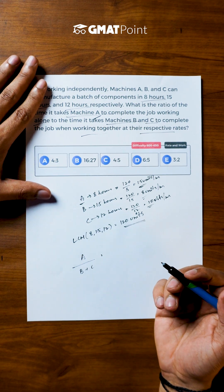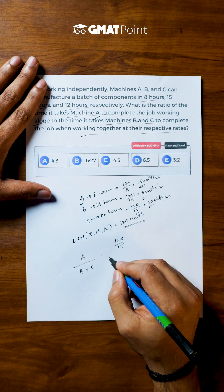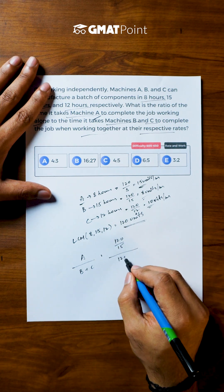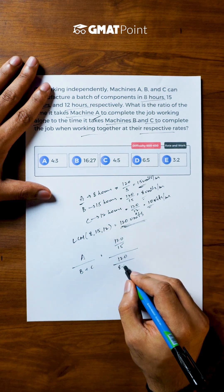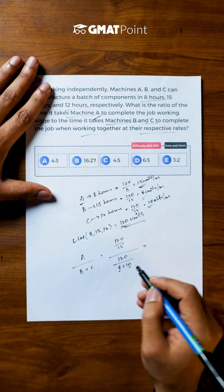So the time taken by machine A to complete 120 units of work is 120 by 15. Similarly in the case of B plus C when they are working together, the total amount of work that needs to be done is 120 units and per hour both of them together the amount of work done is 8 plus 10.